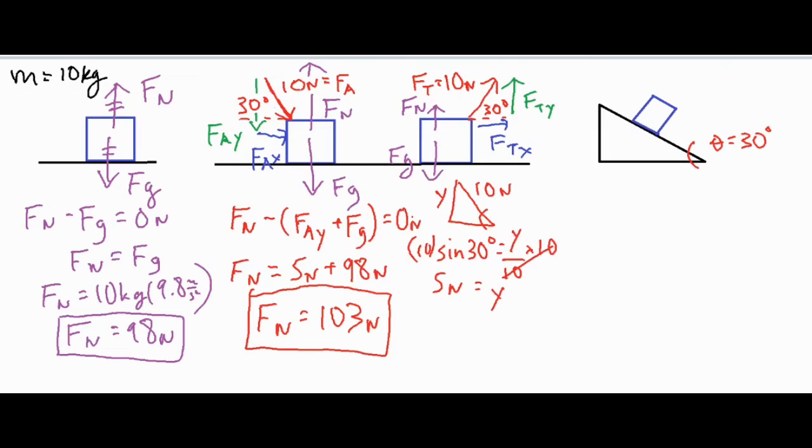So for this one, if we wanted to write it out, then we would just go ahead and say the Fn plus the Ft y minus Fg equals zero. So in this case we want to move a few things around and we'll leave the Fn on the left side, and then we're going to add Fg to the other side, so we have Fg on the right side, and then minus Ft y from both sides. So in this case instead of taking 5 plus 98, it would be 98 minus 5 newtons, and that would equal 93.